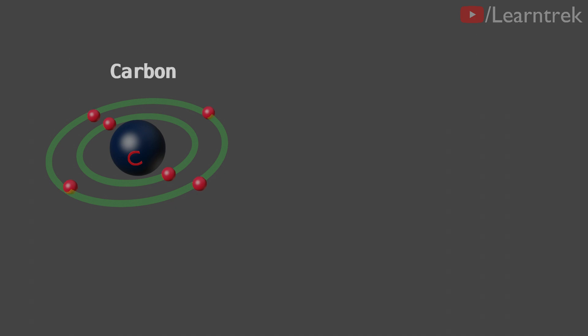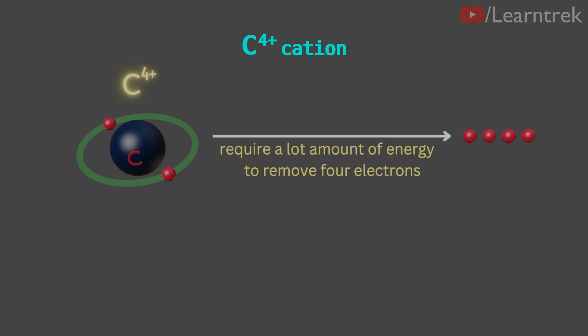If carbon loses four electrons and forms a C4-positive cation, then it would require a lot of energy to remove four electrons.